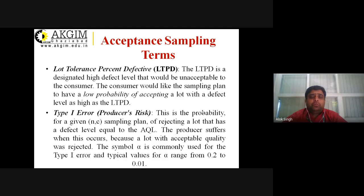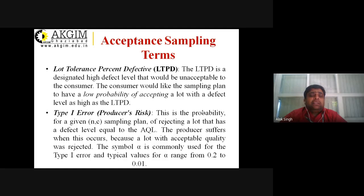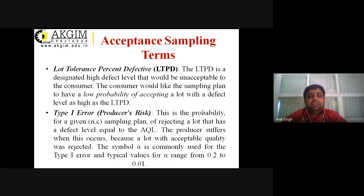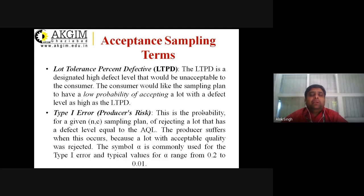In a single sampling plan, you have to decide the AQL and LTPD. LTPD is the quality level of a bad lot — a lot you would technically accept but consider bad. The LTPD is a designated high defect level that would be unacceptable to the consumer, and the consumer would like a sampling plan to have a low probability of accepting a lot with a defect level as high as the LTPD.